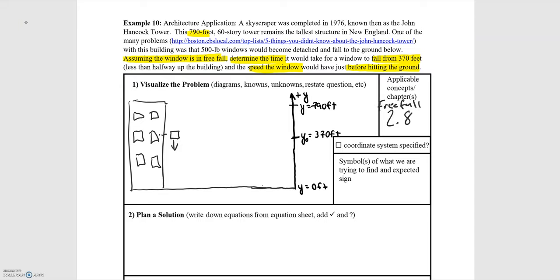I'll put the ground level at a position of y equals zero. Now that we have our coordinate system defined, our next step is to draw our motion diagram. This window we can assume is starting from rest when it becomes dislodged and then goes into free fall. It starts from rest, and since it's in free fall, its acceleration is downward — in the same direction as its velocity — so the window is going to be speeding up as it goes down.